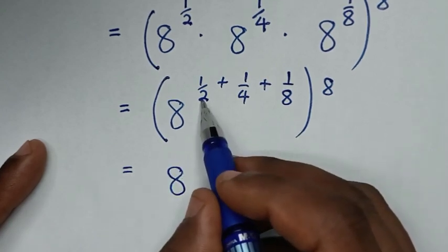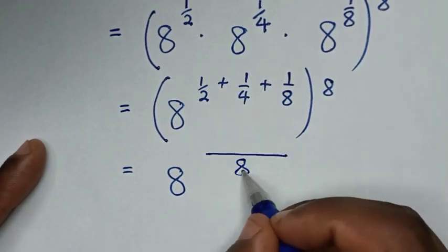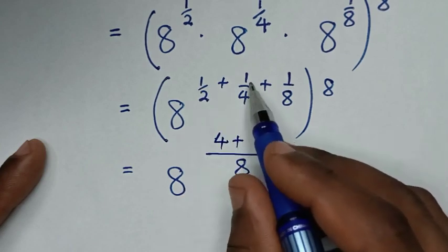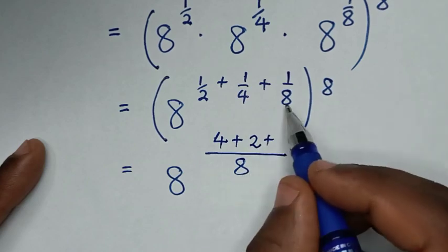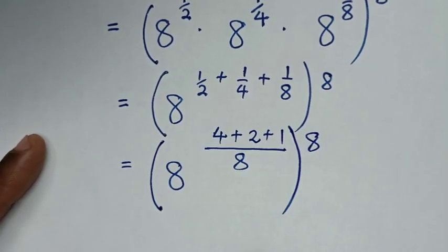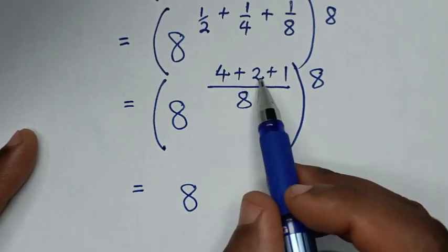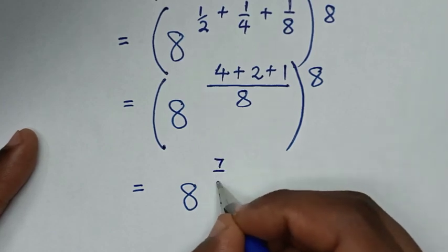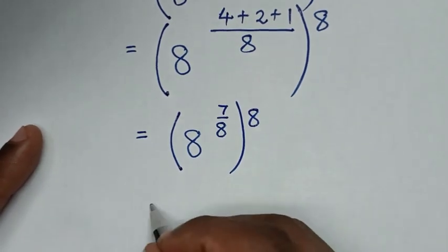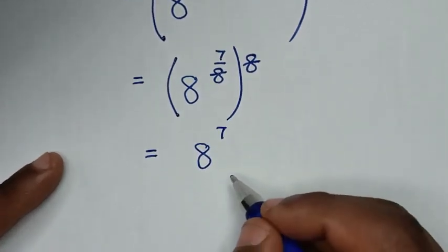Then it will be equal to 8 with denominators 2, 4, and 8 — the common denominator is 8. So 8 divided by 2 is 4, 4 times 1 is 4; plus 8 divided by 4 is 2, 2 times 1 is 2; plus 8 divided by 8 is 1, 1 times 1 is 1. Bracket this power of 8. Then 4 plus 2 is 6, 6 plus 1 is 7, so it will be 7 over 8. So 8 power of 7 over 8, bracket power of 8. To simplify, we cancel this, so it will be 8 power of 7.